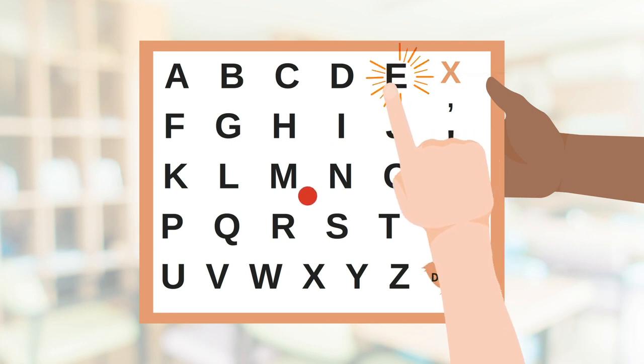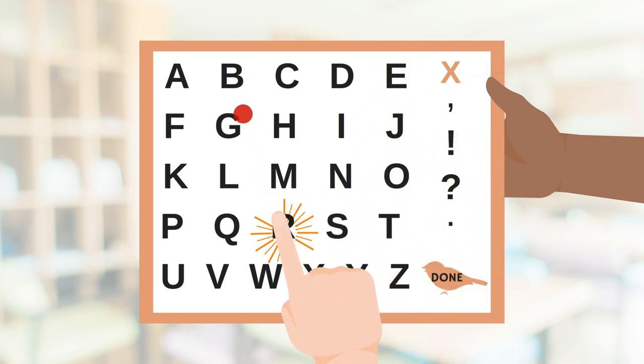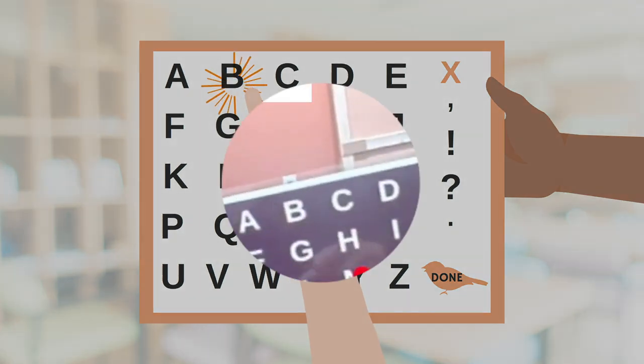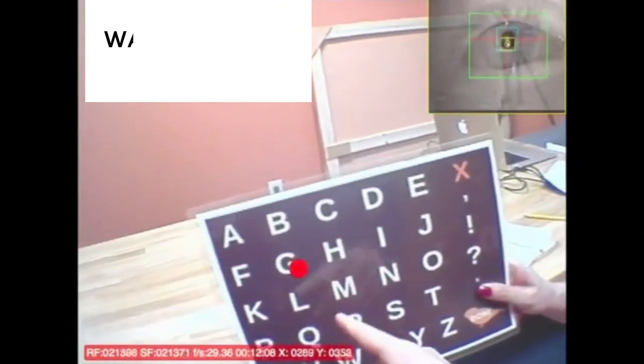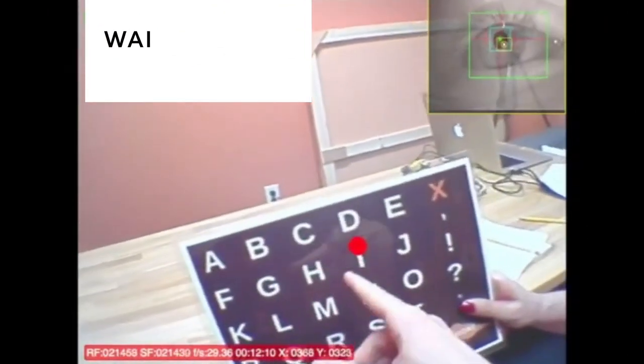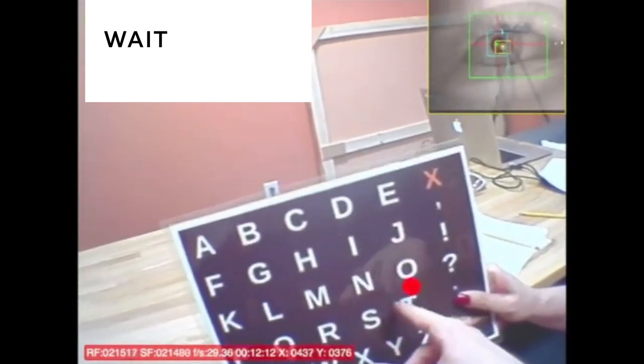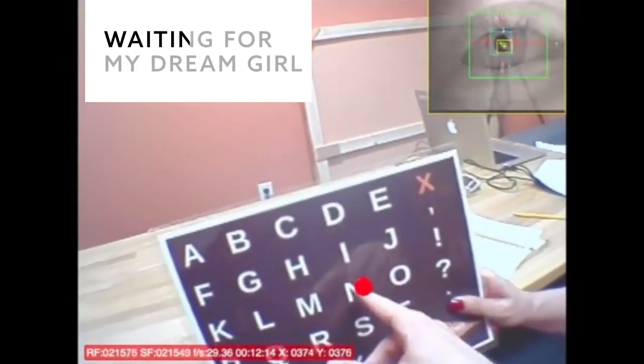If individuals were receiving subtle cues from their letter board assistant, that influence would be evident during testing. For example, one participant was asked to name something he had to wait for. He responded by spelling, waiting for my dream girl.